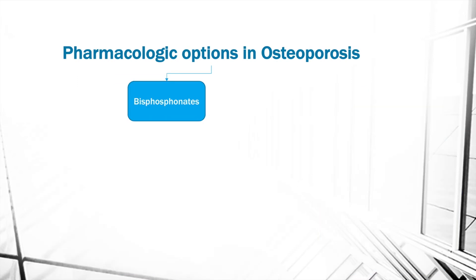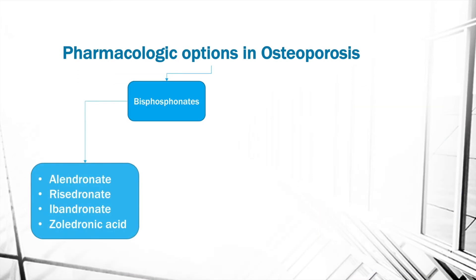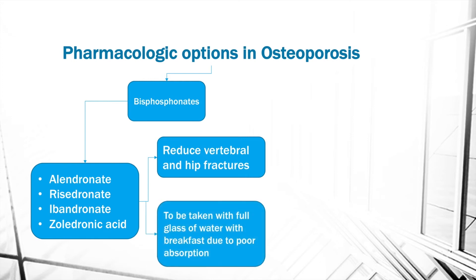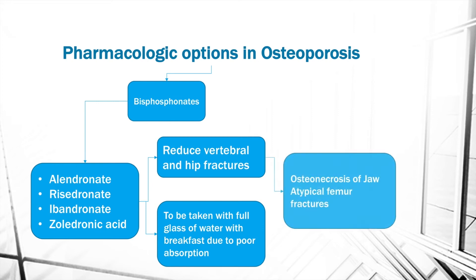The next option to treat osteoporosis is bisphosphonates, which include alendronate, risedronate, ibandronate, and zoledronic acid. These reduce vertebral and hip fractures and are to be taken with a full glass of water with breakfast. Due to poor absorption, adverse side effects include osteonecrosis of the jaw and atypical femur fractures.